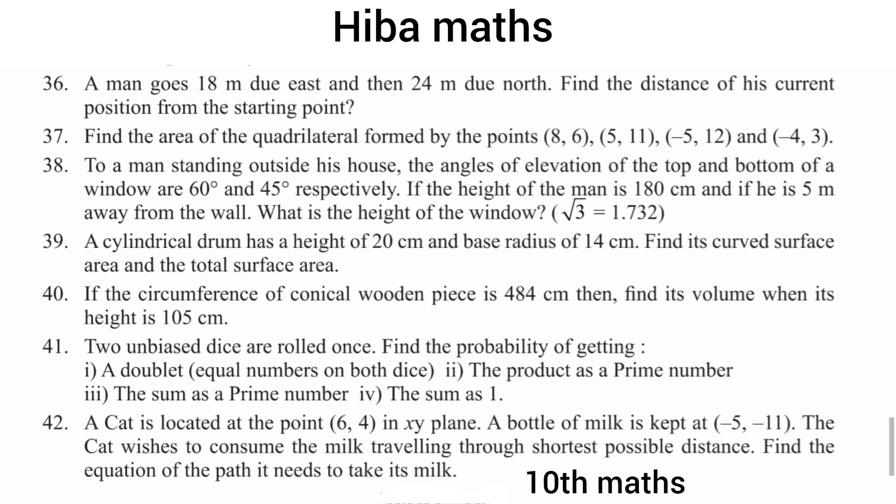Two unbiased dice are rolled. Probability is very easy. Two dice give outcomes from (1,1) to (6,6). First subdivision: find the probability of a doublet — equal numbers on both sides. Second: the product is a prime number. Third: the sum is a prime number.